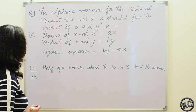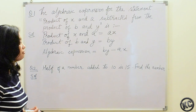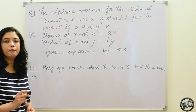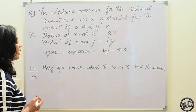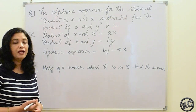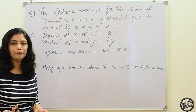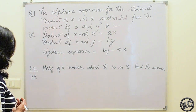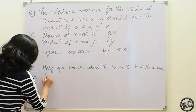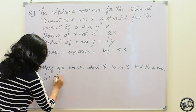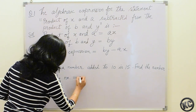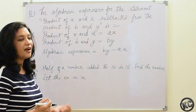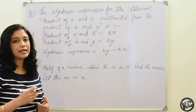Half of a number added to 10 is 15. Find the number. Here we have to find the number, which is not given to us. We will use a variable to find it. Let the number be equal to x. In such questions we suppose the unknown number is x.